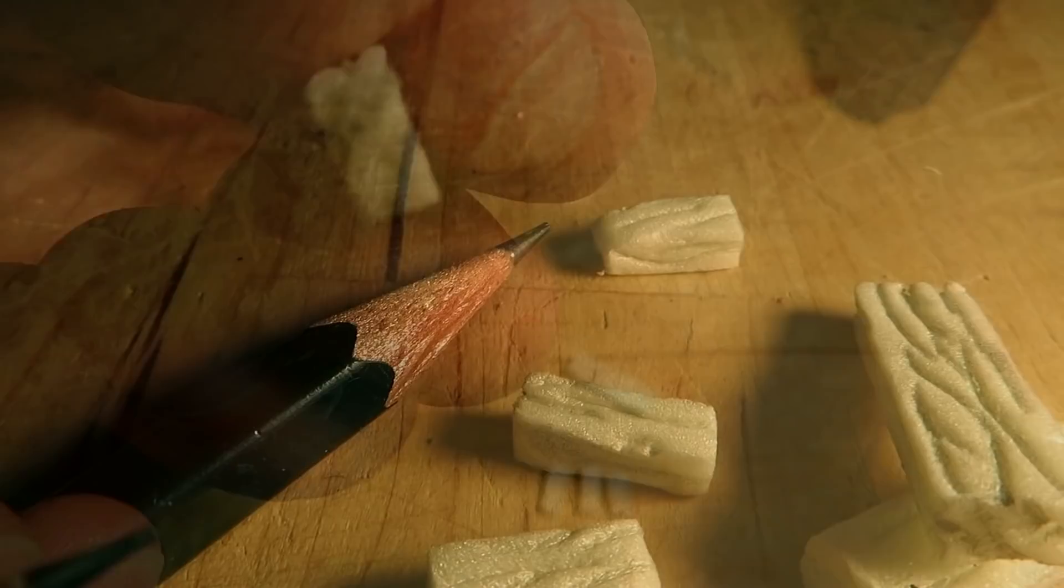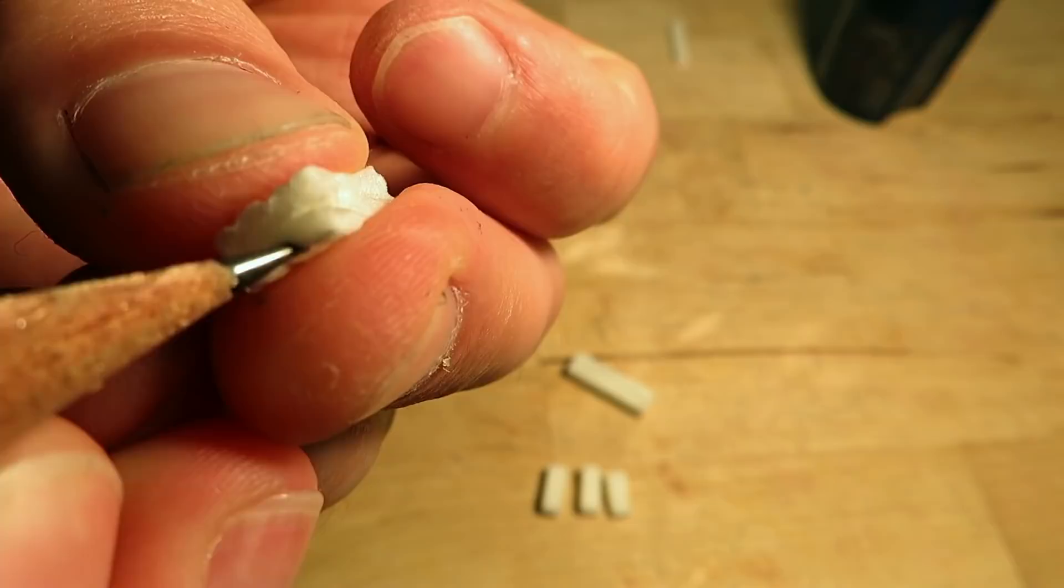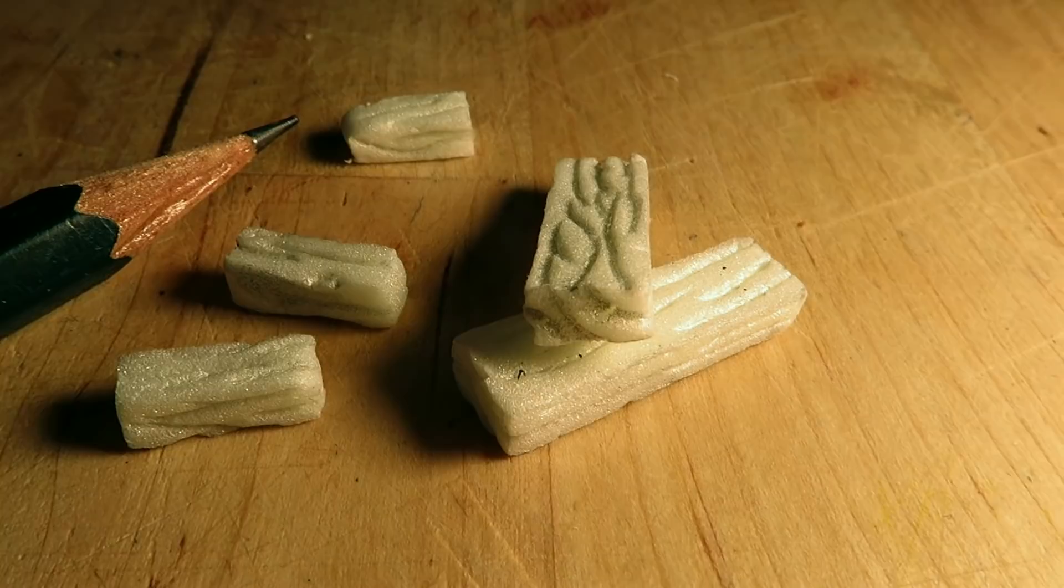Here you can see the wooden pieces we will be using for the base of the ballista. Now it's time to assemble the base. I applied a bit of PVA glue, where the pieces will be attached to each other.